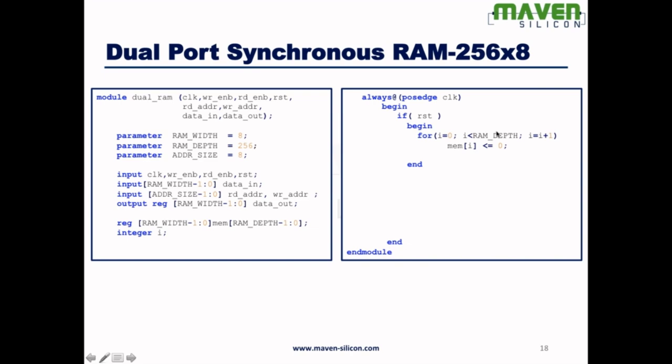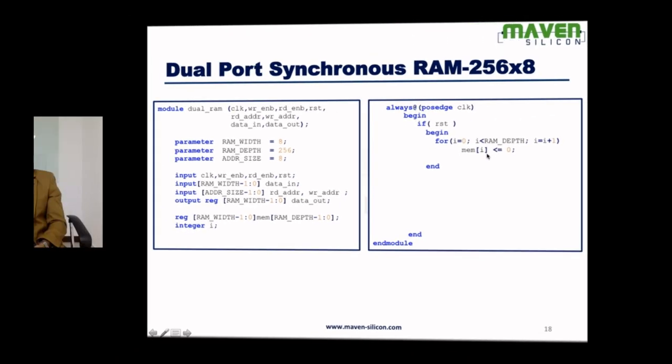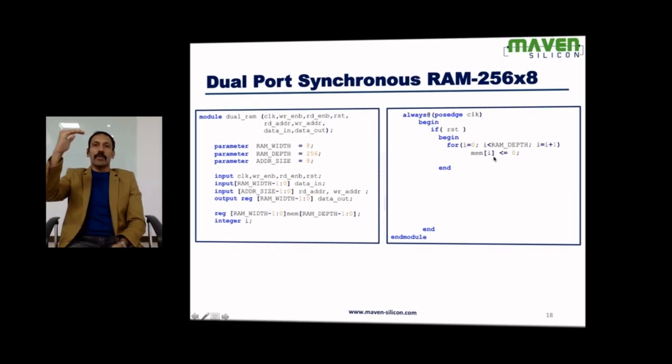And that will go up to 255, 0 to 255, and for every value basically it's going to assign 0 to that particular location. So as per this for loop, it's going to happen something like this: mem[0], mem[1], mem[2], mem[3], mem[100], mem[200], mem[255]. So it's going to initialize every location with 0.